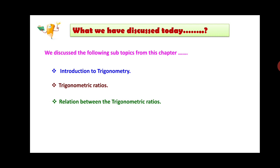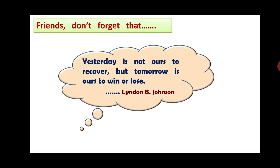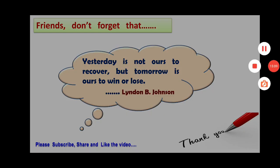So till now we discussed introduction to trigonometry, trigonometric ratios, relations between the trigonometric ratios, the table of values of trigonometric ratios of angles 0°, 30°, 45°, 60°, and 90°, and trigonometric identities. Please revise these once again. Remembering the words of Lyndon B. Johnson: 'Yesterday is not ours to recover, but tomorrow is ours to win.' If you like this video, please subscribe and share. Thank you.